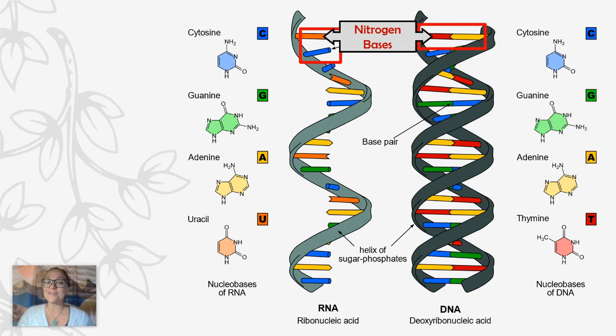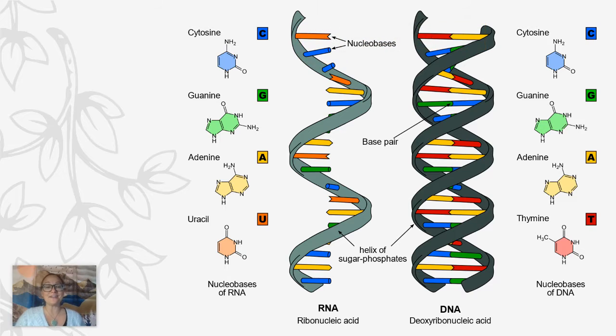We have a sugar phosphate backbone and nitrogen bases that make up those nucleotides. The other difference is though that in RNA, RNA has the four nitrogen bases, C, G, A, and U. Uracil is only found in RNA nucleotides. And in DNA, the four bases are C, G, A, and T. So thymine is only found in DNA.